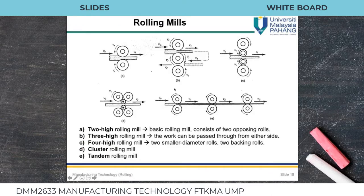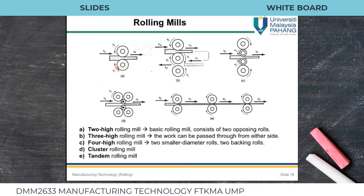There are different types of rolling mills. Type A is the two-high rolling mill, type B is the three-high rolling mill, type C is the four-high rolling mill, type D is the cluster rolling mill, and type E is the tandem rolling mill. The two-high rolling mill is the basic type, consisting of two opposing rolls rotating in opposite directions. When a third roll is added it becomes a three-high rolling mill, allowing the workpiece to pass through two passes for greater thickness reduction.